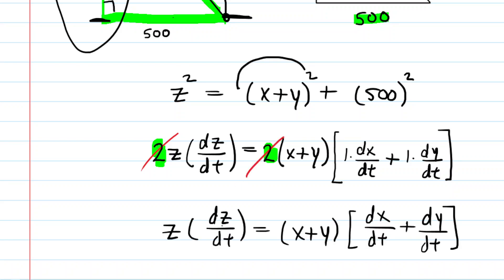Great. Now remember, we're solving for dZ/dt. That would be the rate of change in the distance between the two walkers. And that's not so easy yet because we have to plug in X, Y, Z and then dX/dt and dY/dt. So we have to start thinking about what these values are.